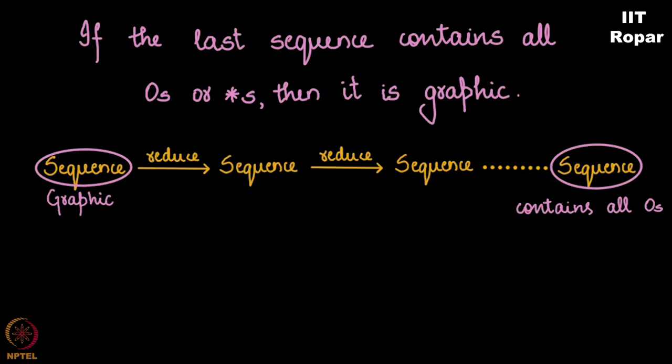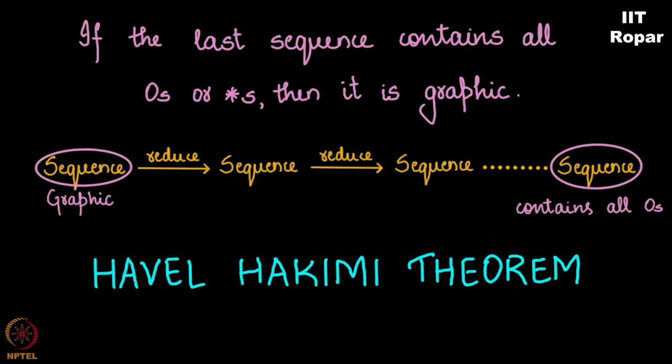Now this theorem is called the celebrated Havel-Hakimi theorem. We are not going to prove this theorem as it involves a lot of technicalities. We did the previous problem, 5533222, in order to motivate you to think about this theorem. Now go back to that video, look at how the graph was drawn, and you will realize that the graph drawing is actually not required. Why? Just reducing the sequence and writing the sequences is enough for you to judge if a sequence is graphic or not.